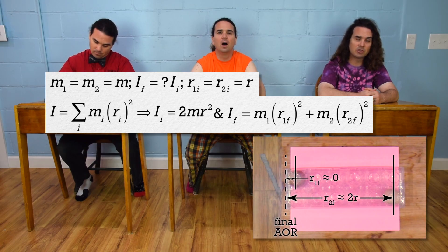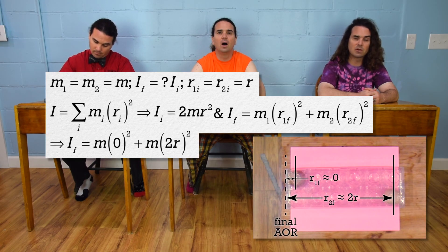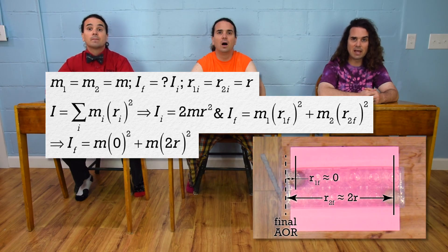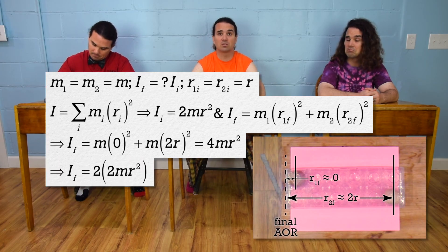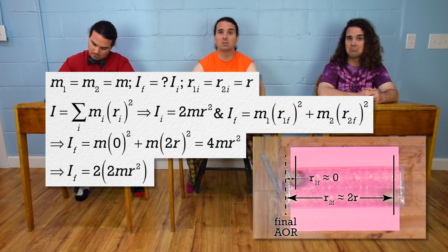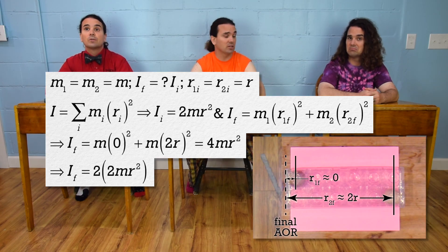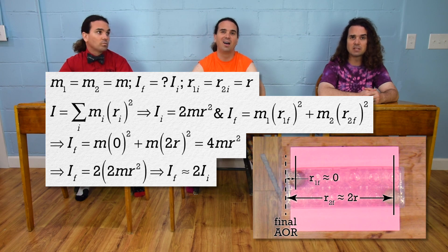The final moment of inertia equals m(0)² + m(2r)² = 4mr². The initial moment of inertia equals 2mr², which we can substitute into the equation: Iₓ = 2Iᵢ.